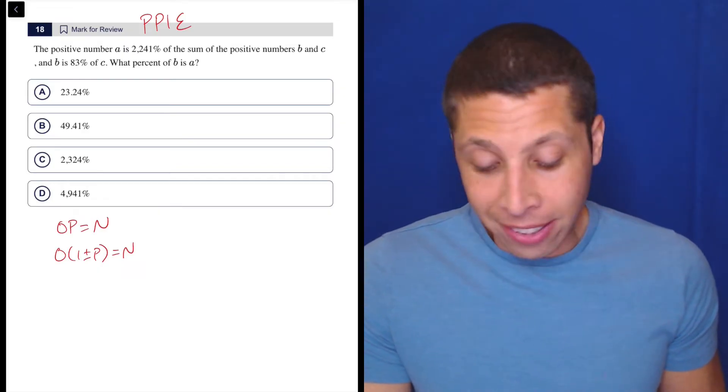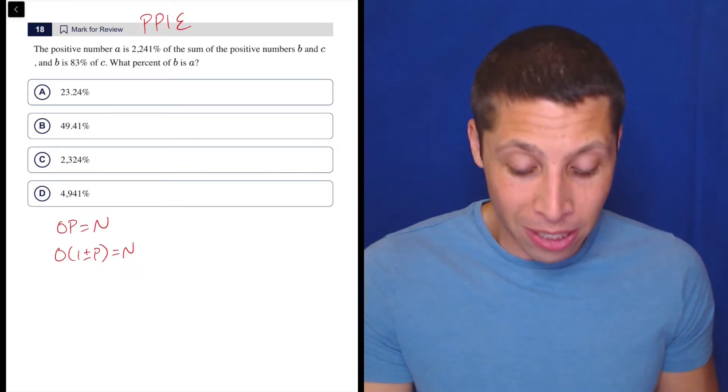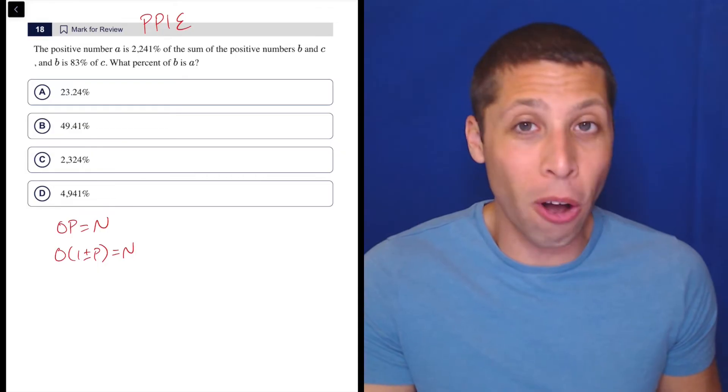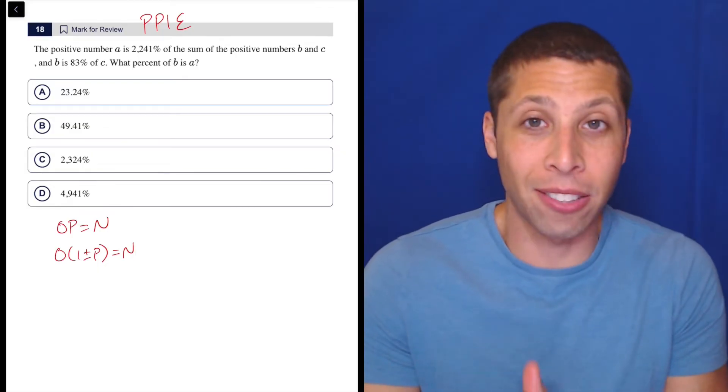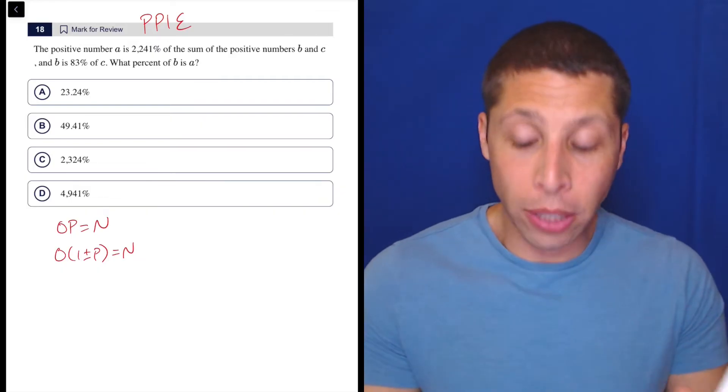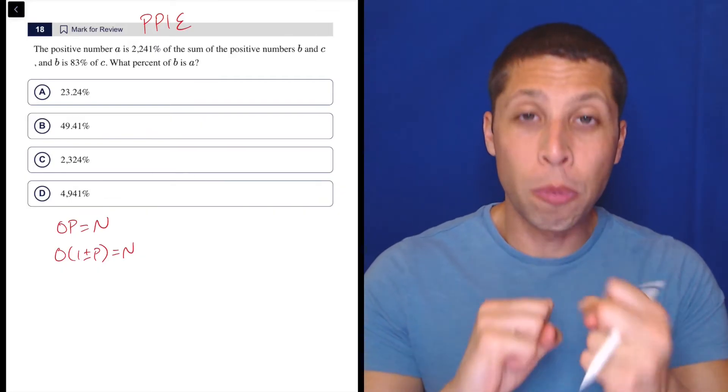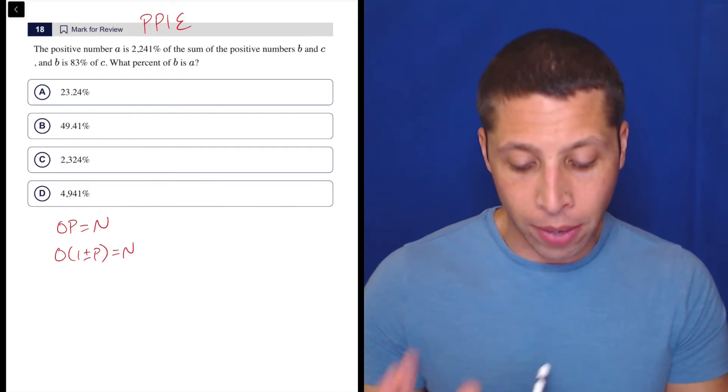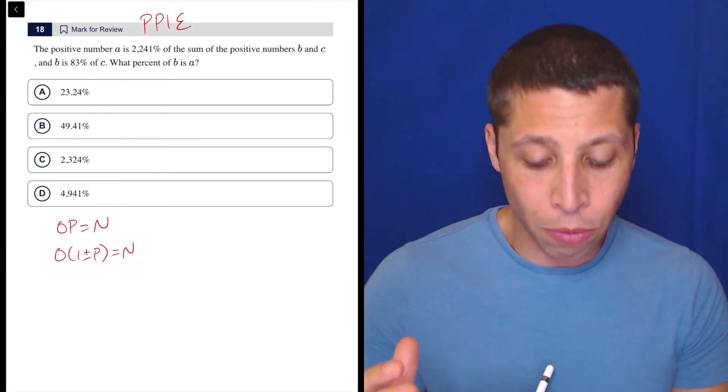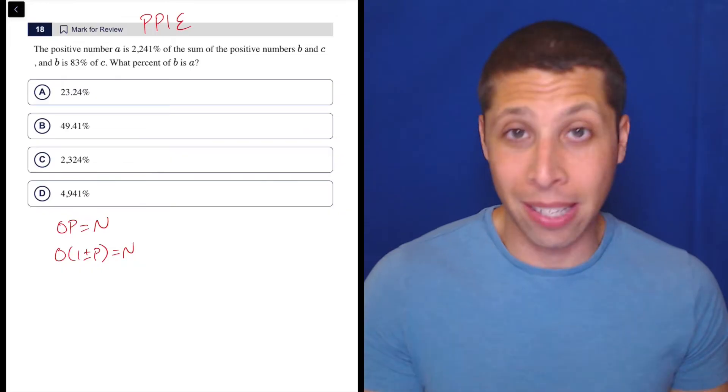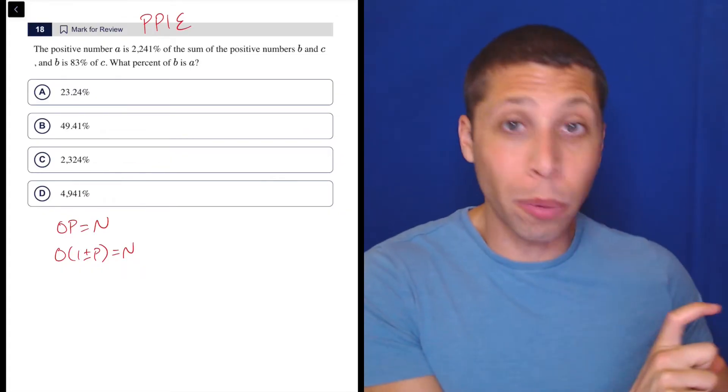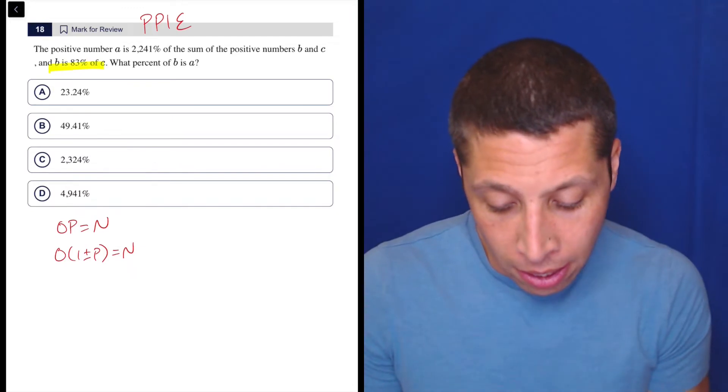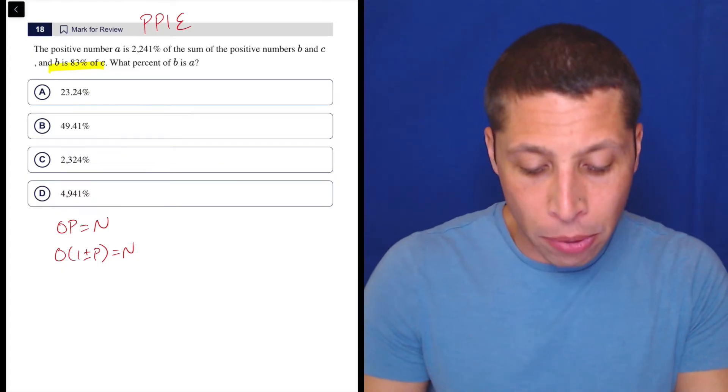But my other instinct is like, well, if A, B, and C don't seem to matter, then why don't I just make up a number and try to see if I can work through the question without having to deal with all the confusing variables. Let's just see it as numbers. And I'm looking for a weak spot - I'm looking for a place where I can kind of get two numbers to be related in a very intuitive way. So choice A or the letter A is very messy. The number A is 2,241% of the sum of the positive numbers B and C. That is a very confusing idea. But the second part of this question, let me highlight it, is actually really simple. B is 83% of C.